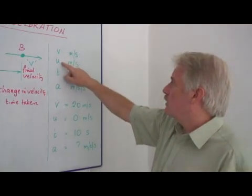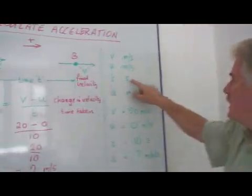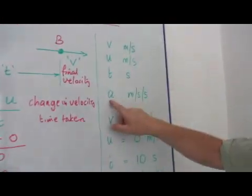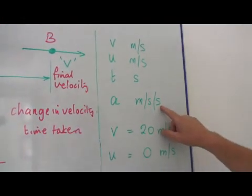v, the final velocity, u, the initial velocity, t, the time in seconds, and a, the acceleration in meters per second per second.